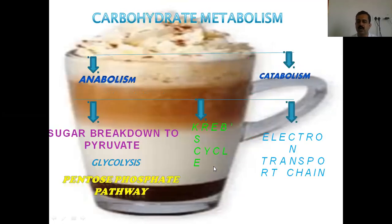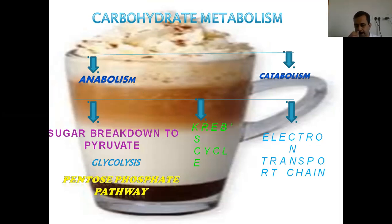Carbohydrate metabolism is divided into anabolism and catabolism. Sugar breakdown to pyruvate occurs with the help of glycolysis and the pentose phosphate pathway. Another cycle associated with glycolysis is the Krebs cycle, and ultimately through the Krebs cycle the electron transport chain works. All these processes are interdependent.